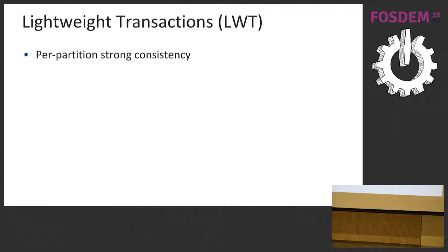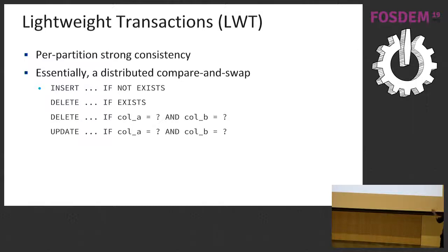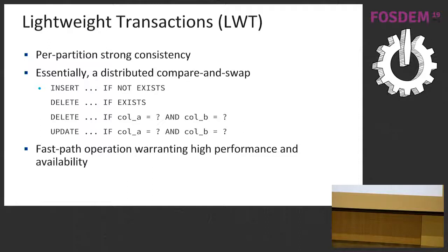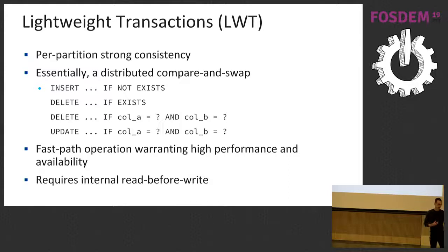Cassandra exposes this feature as lightweight transactions, which provide strong consistency per partition. It is essentially a distributed compare-and-swap: you specify the new value and a precondition that must hold for the write to apply. It's not a full transactional API, so you end up writing programs like lock-free algorithms — making modifications to a table and then atomically updating a pointer to the new data. It is a datapath operation, so we want it to be high-performance and available. It requires an internal read before write to match the current value against the user's preconditions.